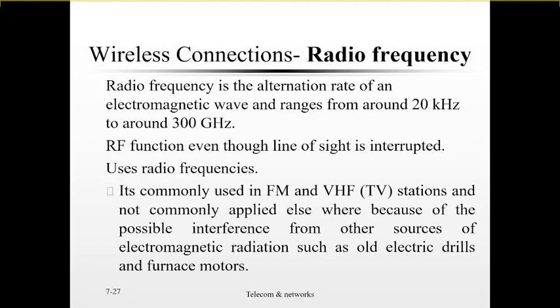Radio frequency can function even though there is no clear line of sight — that is why you can be down the hill and still communicate when the antenna booster is very far. That is why in the villages we can listen to radio and TV stations without seeing any antenna around. Radio frequencies are commonly used in FM, that is frequency modulation radios, and VHF, which is very high frequency TV stations.